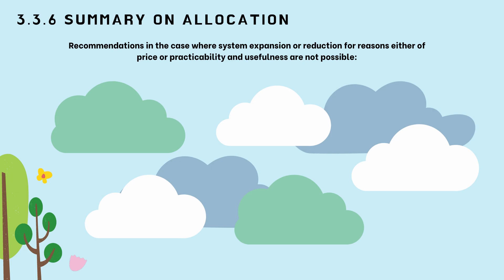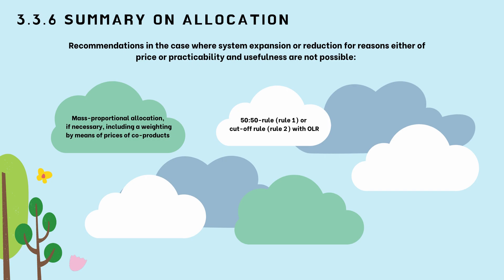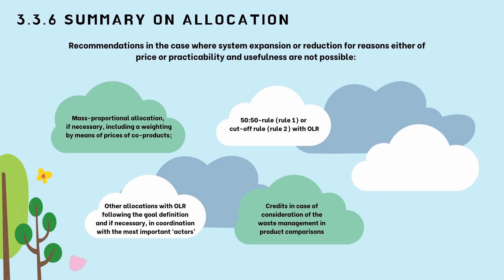Recommendations when system expansion is not possible due to cost or practicability: first, mass proportional allocation, including weighting by prices of co-products if necessary; second, the 50-50 rule or cut-off rule for open-loop recycling; third, other allocations for open-loop recycling following the goal definition and, if necessary, in coordination with the most important actors; fourth, credits in case of consideration of waste management in product comparisons; and fifth, the basket of benefit method within the comparison of waste management technologies.